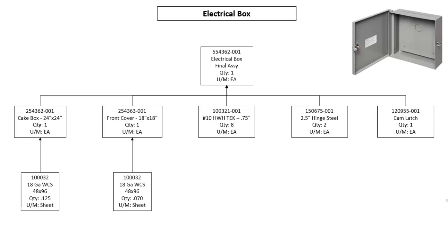A product structure diagram is a manufacturing document that shows the parent-child relationships between assemblies, parts, and raw materials, and it's used for material planning. Each part is in a box and has a unique number, a name, a quantity, and a unit of measurement. It shows how parts are fed into that top-level assembly.